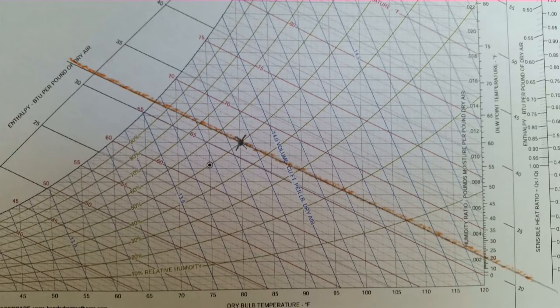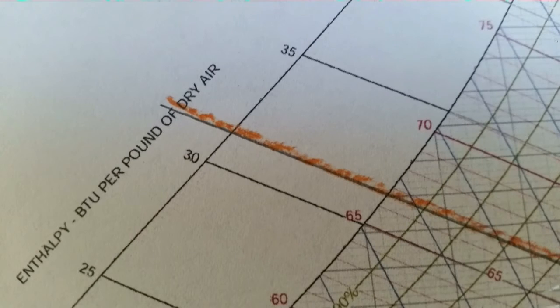Here is a closer look at where our line ends up at the top of the chart. You see we have about, I'd say around 31 and a half, 32 BTU's per pound of dry air.